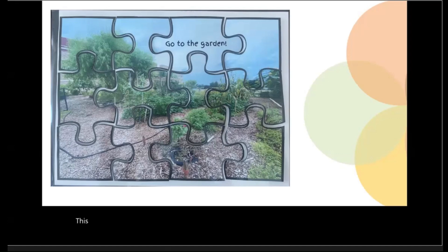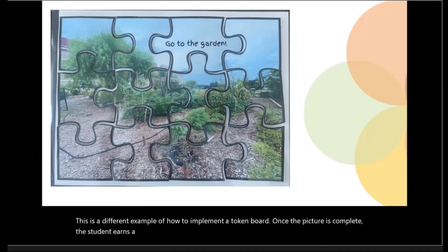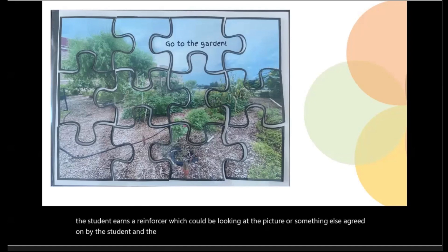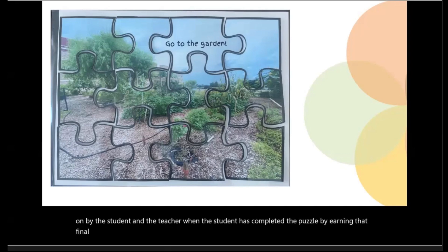This is a different example of how to implement a token board. Once the picture is complete, the student earns a reinforcer — which could be looking at the picture or something else agreed on by the student and the teacher. When the student has completed the puzzle by earning that final piece, in this example, we see that the student gets to go to the garden.